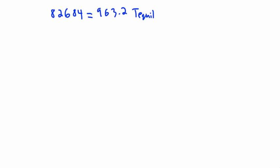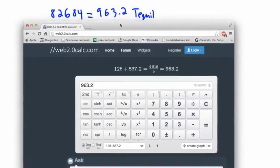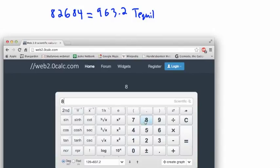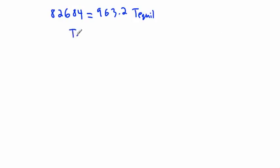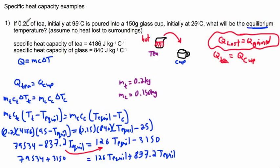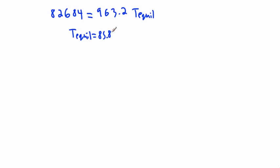This is really quite long but we're almost done. How do I get T equilibrium by itself? I take this number and divide by this. So 82684 divided by 963.2, which gives me 85.8. So T equilibrium equals 85.8, which is pretty much 86 degrees Celsius.